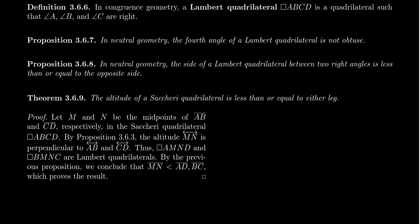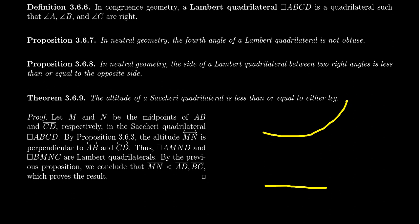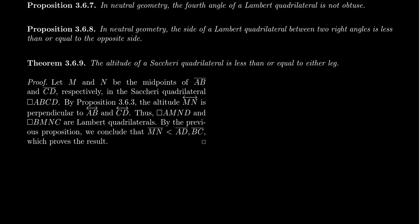Another proposition worth mentioning: in neutral geometry, the side of a Lambert quadrilateral between two right angles is less than or equal to the side opposite to it. The sides between right angles are less than or equal to the sides opposite them — that's a consequence of the theory, which I'll also leave as a proof to the viewer. The final theorem I am going to prove here establishes the connection between Saccheri and Lambert quadrilaterals — specifically, the altitude of a Saccheri quadrilateral is less than or equal to either of its legs.